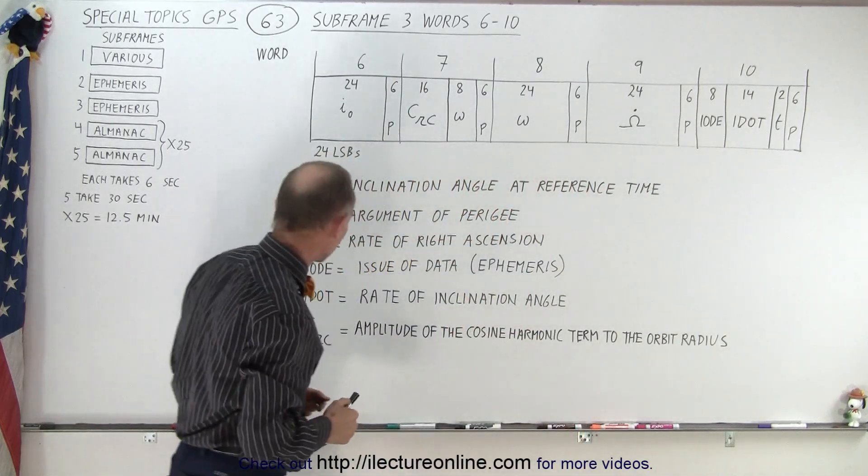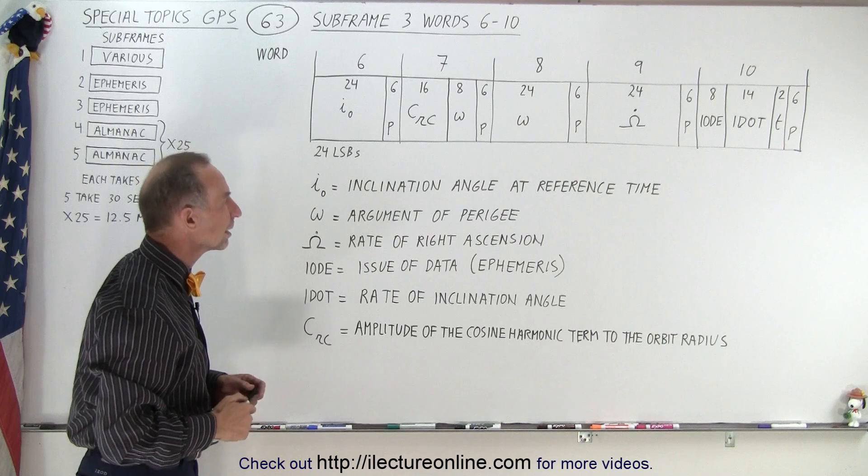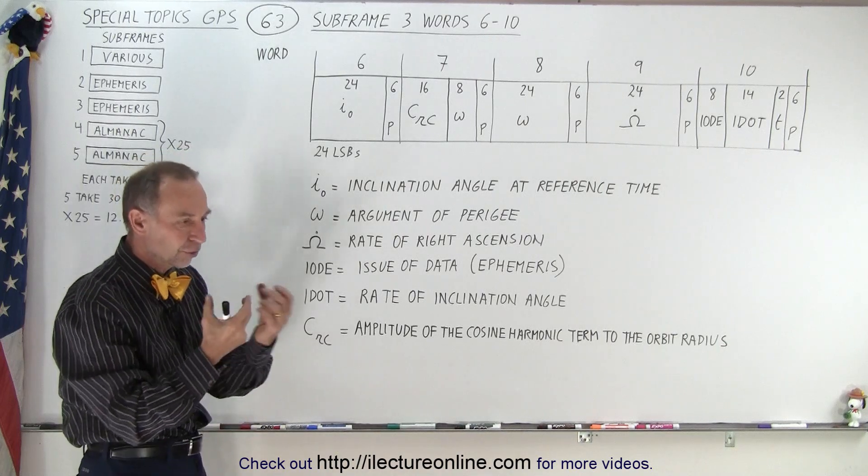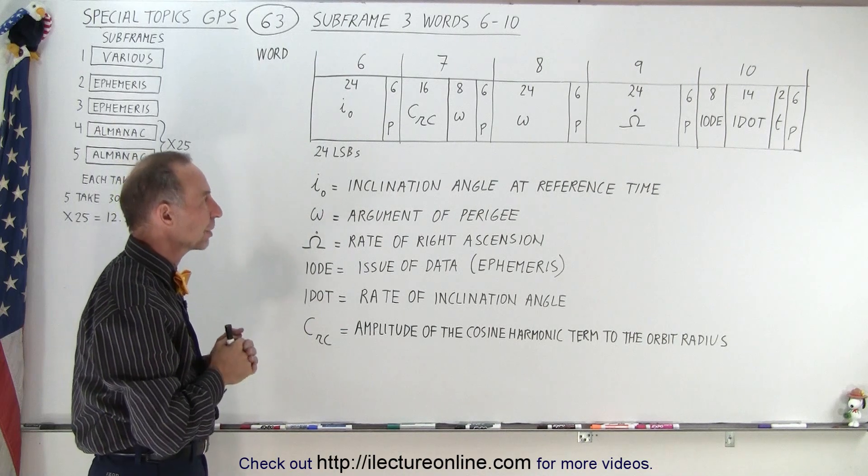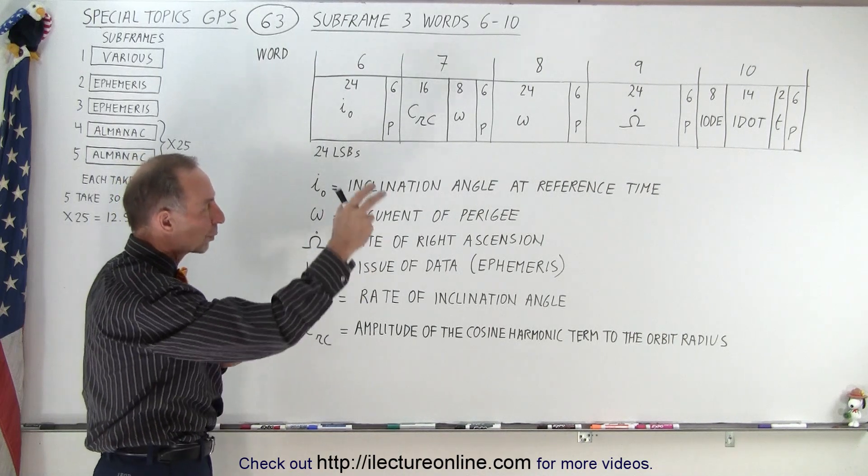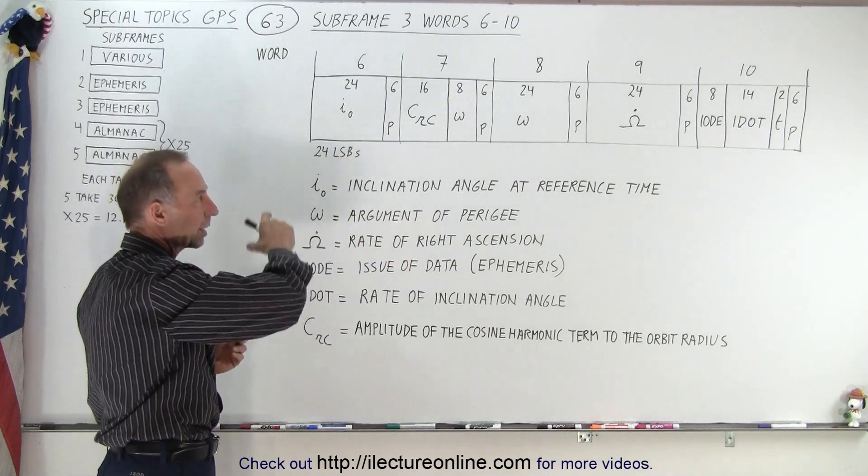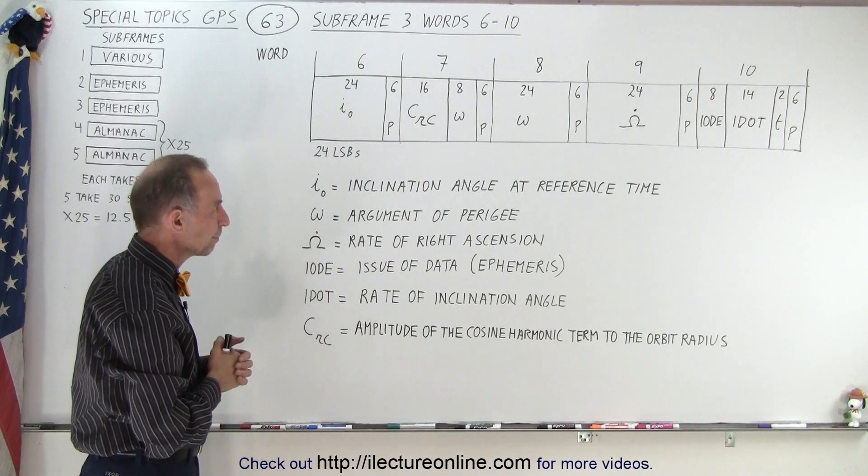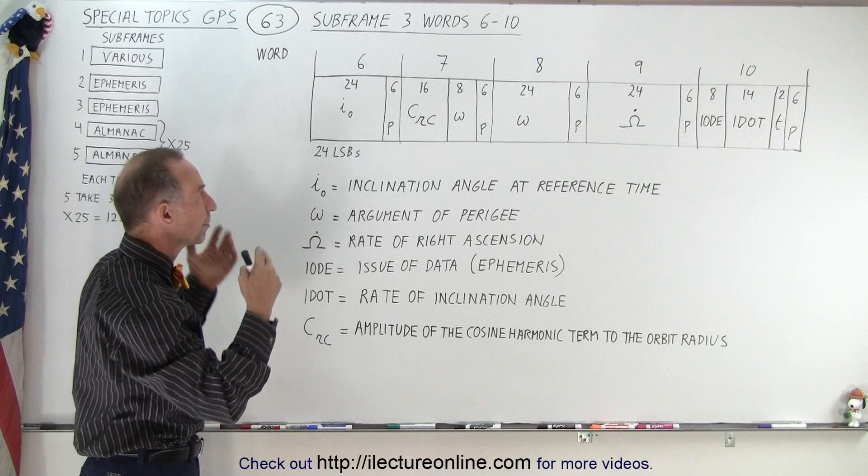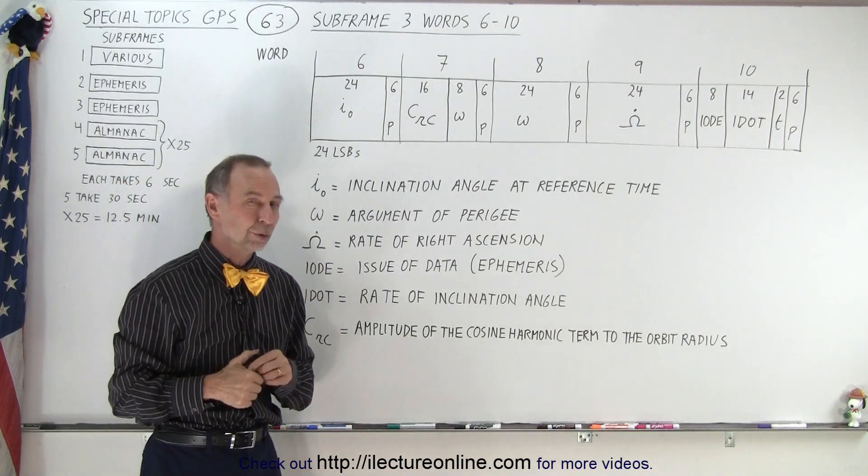And then we still have an IODE, which is the issue of data of the ephemeris. Again, to make sure that we're dealing with the right set of ephemeris data, we want to make sure we check that out. And we're going to compare that to some contents that were in word 2 and that we covered in an earlier video.